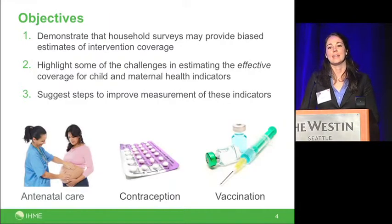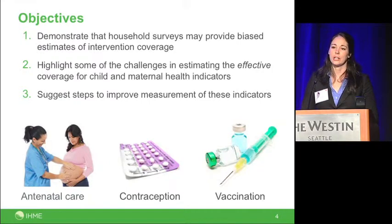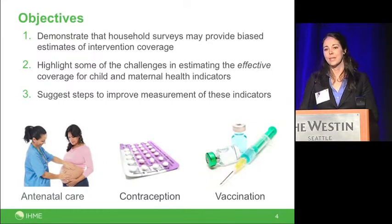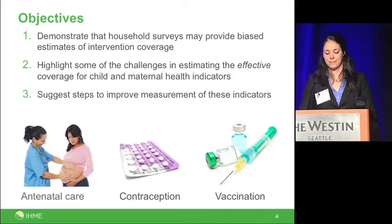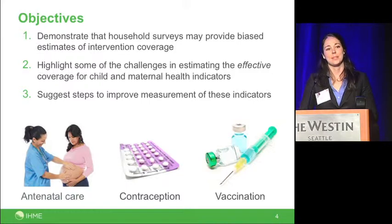My goal for today is to use SM2015 data to illustrate how household surveys provide an incomplete picture of effective coverage. I'll discuss antenatal care, contraceptive prevalence, and vaccination coverage, and highlight the biggest challenges in measuring effective coverage of these interventions and suggest steps to improve their measurement.